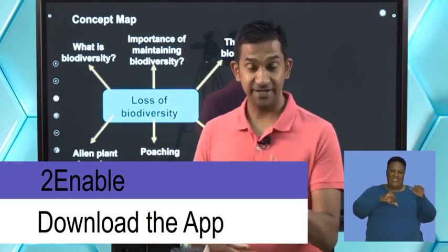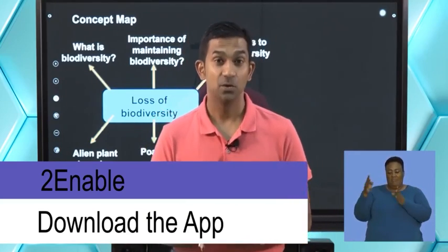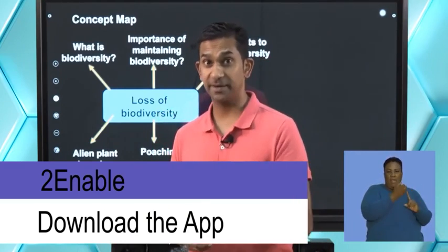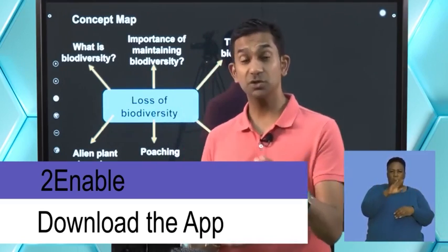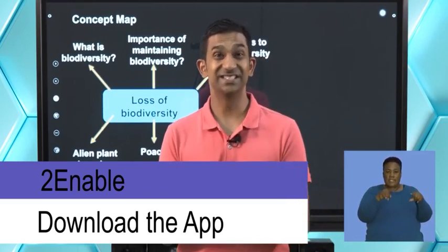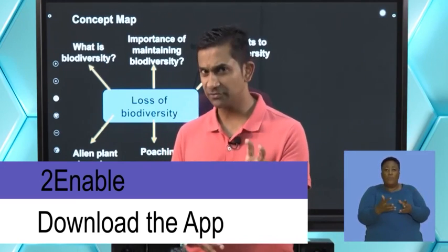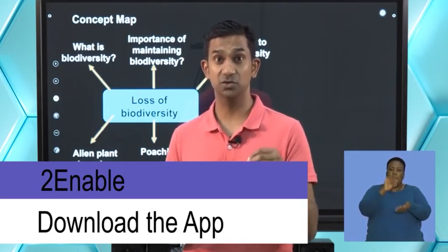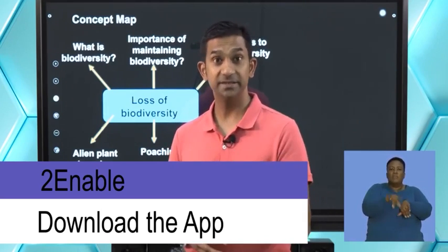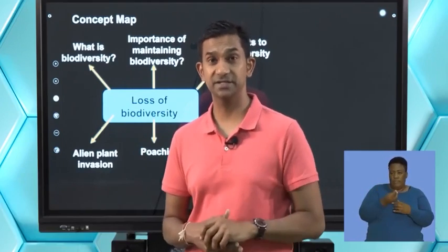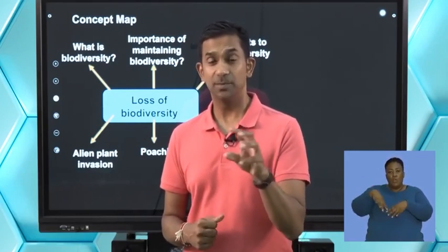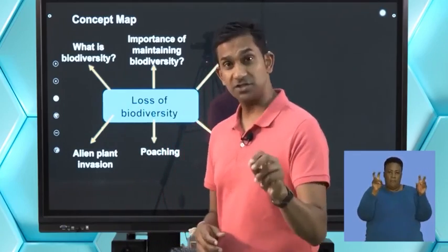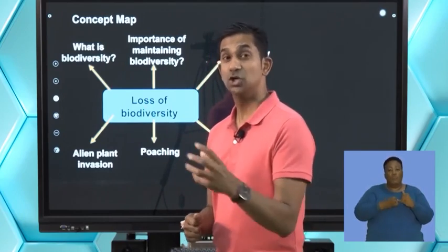Welcome back life science learners to our final segment this day. We were looking at the impact that humans have on the environment by looking at loss of biodiversity. We spent some time looking at solid waste disposal, the different types of solid waste, and we attempted to solve a question about how recycling can reduce the impact solid waste has on the environment. In this segment we want to recap on the loss of biodiversity and apply some of that in the context of a question.